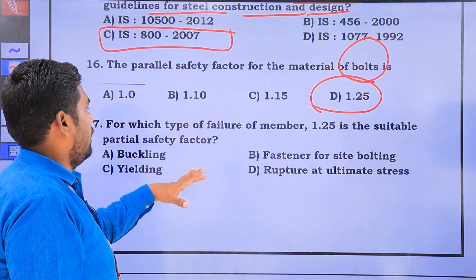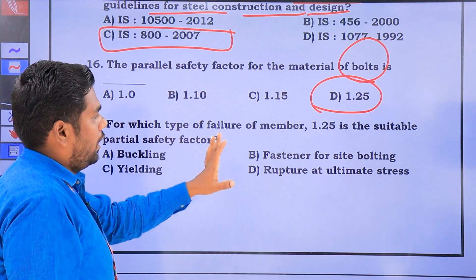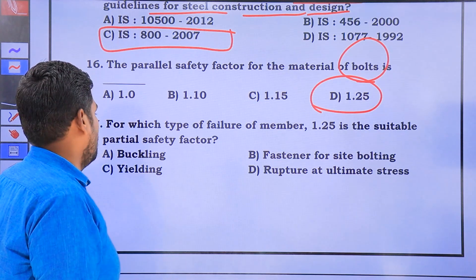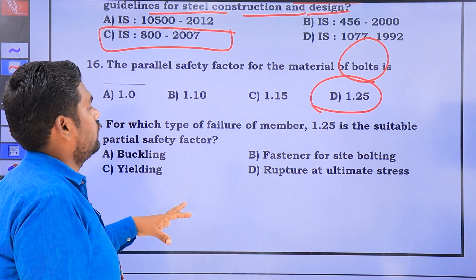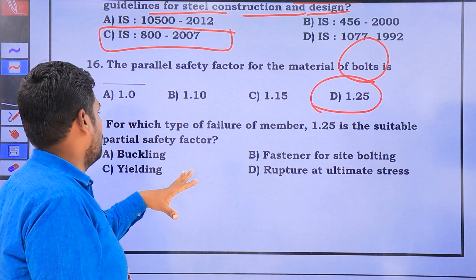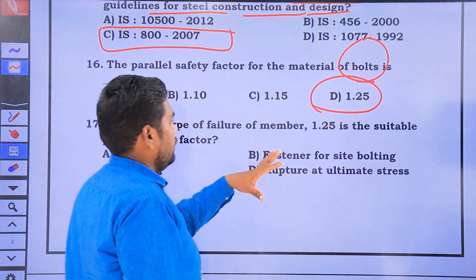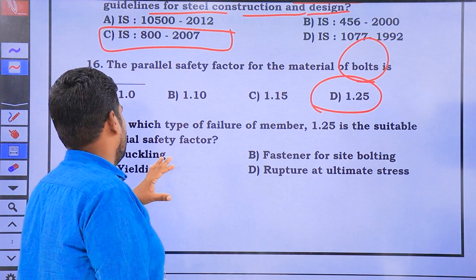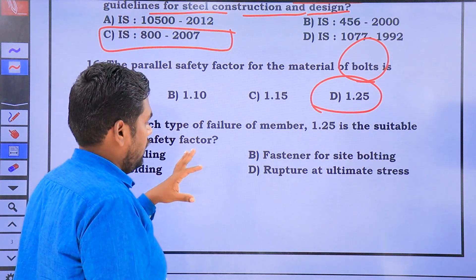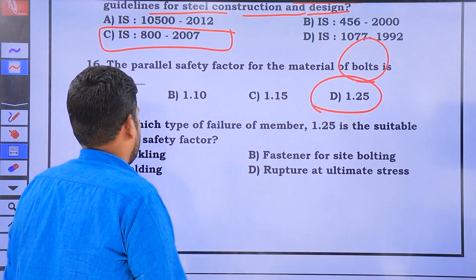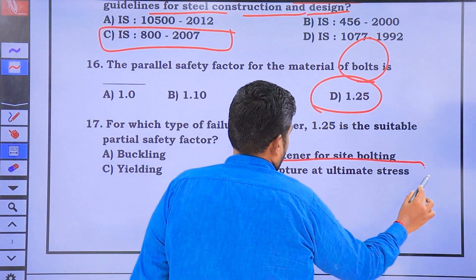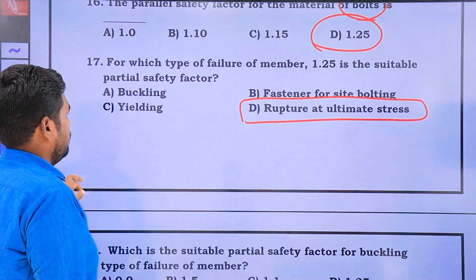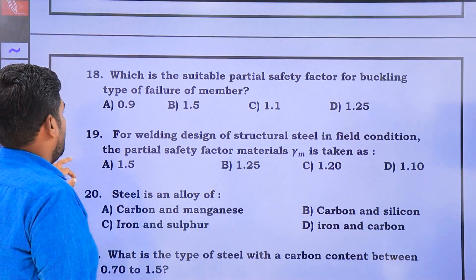For which type of failure is 1.25 a suitable partial factor of safety? The answer is rupture — that is, ultimate stress failure. So, 1.25 is the partial factor of safety corresponding to rupture failure.